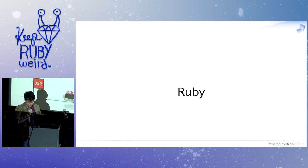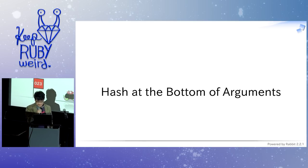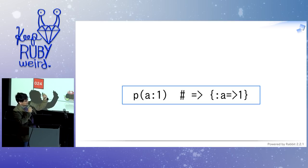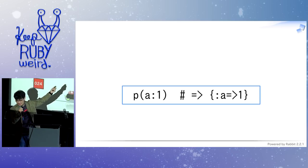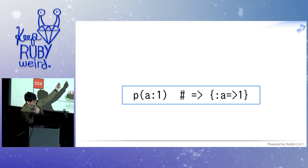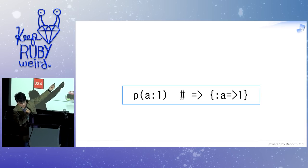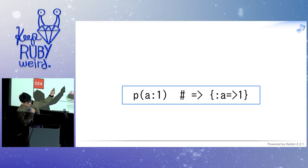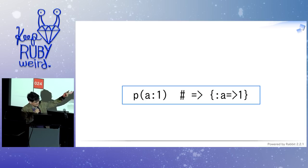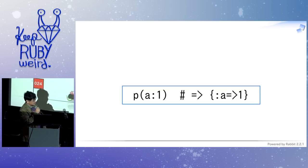But in Ruby, keyword arguments are mere hash at the bottom of the arguments. So when you call the 'p' method — which prints arguments — with a keyword argument, you just print the hash. Weird.